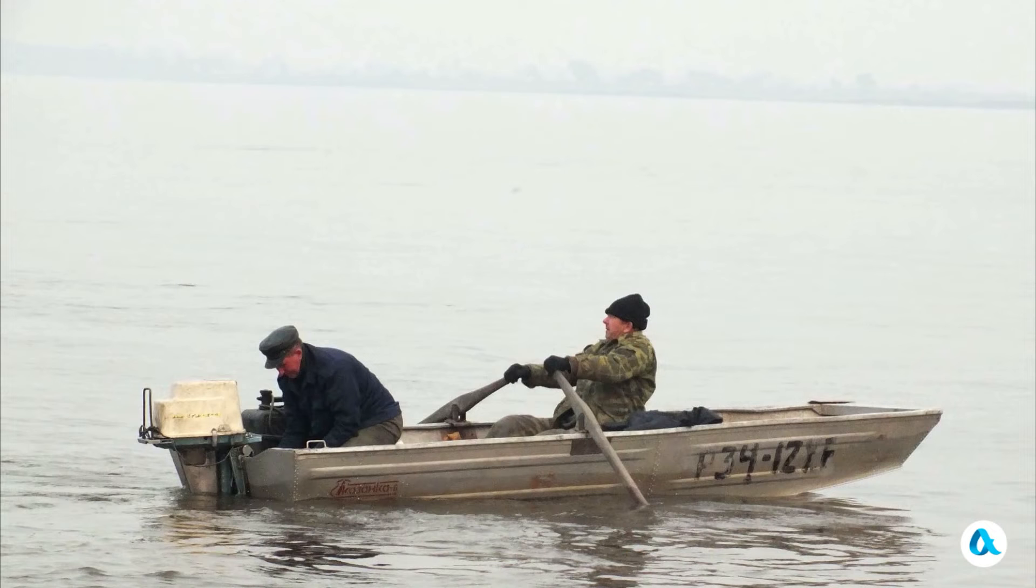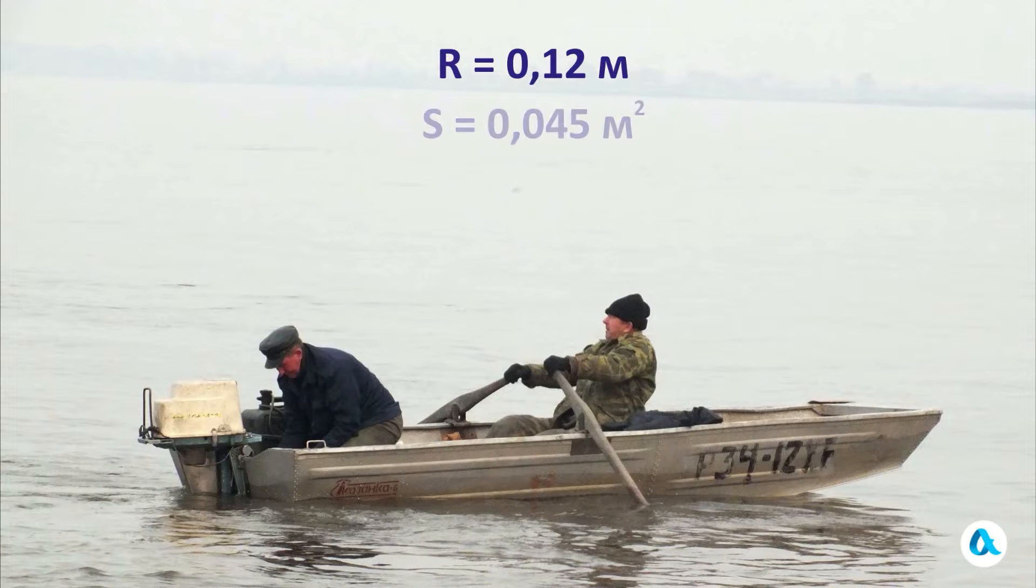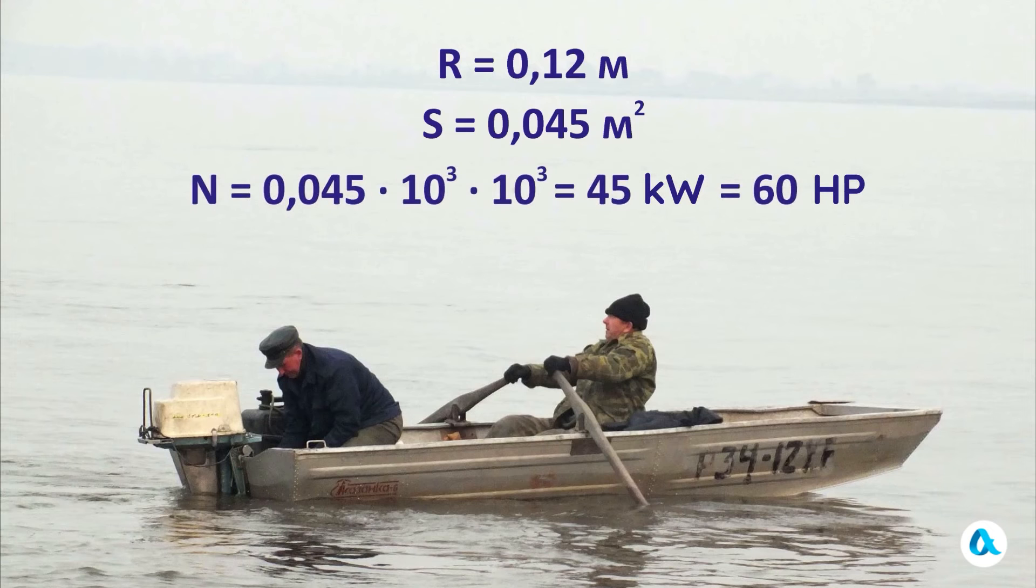And I'll take the boat motor, Vortex. The radius of the blades is 12 centimeters. So the swept area is 45 thousandths of a square meter. According to my formula, the power of the motor is obtained by multiplying these 45 thousandths by the density of water to the power of 10 thirds and by the cube of the permissible speed, which is also 10 thirds. This gives us 45 kilowatts.